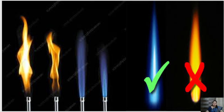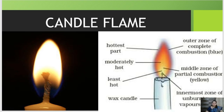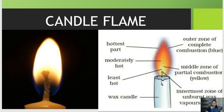Looking at the candle flame diagram: at the outermost layer there is a blue color — that is the non-luminous or outermost layer. Then we have the yellow zone — the luminous zone. Then we have the no-combustion zone. In the innermost layer, there is again a blue color — that is the dark zone. The zones range from hottest to moderately hot to least hot.